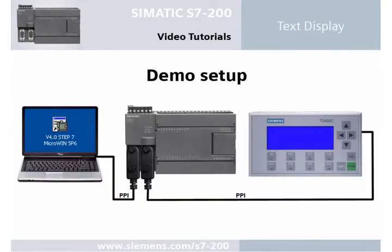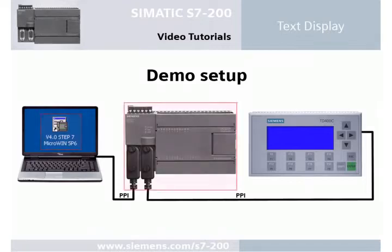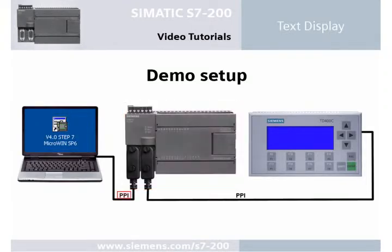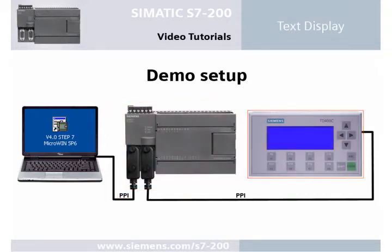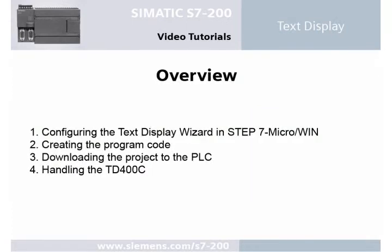In Step 7 Micro, the program code for the text display is generated with the aid of the text display wizard and is downloaded to the S7200 controller via the PC/PPI cable. The communication between the controller and the text display is also via PPI. The task includes the four steps described below.